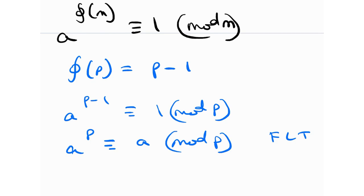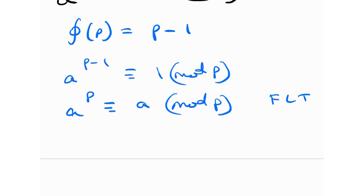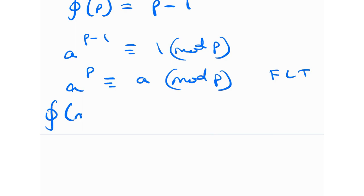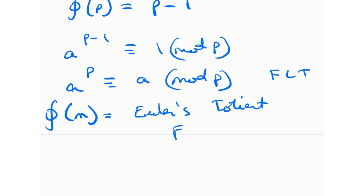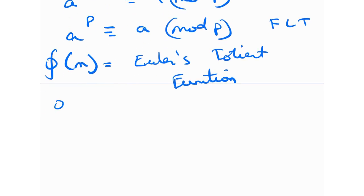If you notice, there is a phi(m) in the theorem — well, what is phi(m)? This phi(m) is what we call Euler's Totient function (ETF). How do we calculate ETF? There is a simple formula. For example, if we need to calculate phi(100), what is phi(100)?